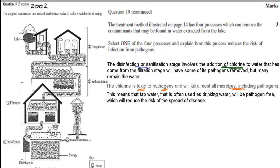So this means that tap water, that's often used as drinking water, will be pathogen-free, which will reduce the risk of the spread of disease. Because here we need to state that pathogens cause disease, so if we remove the pathogens, we remove the cause of disease, or one of the causes of disease. And that will get you your three marks.